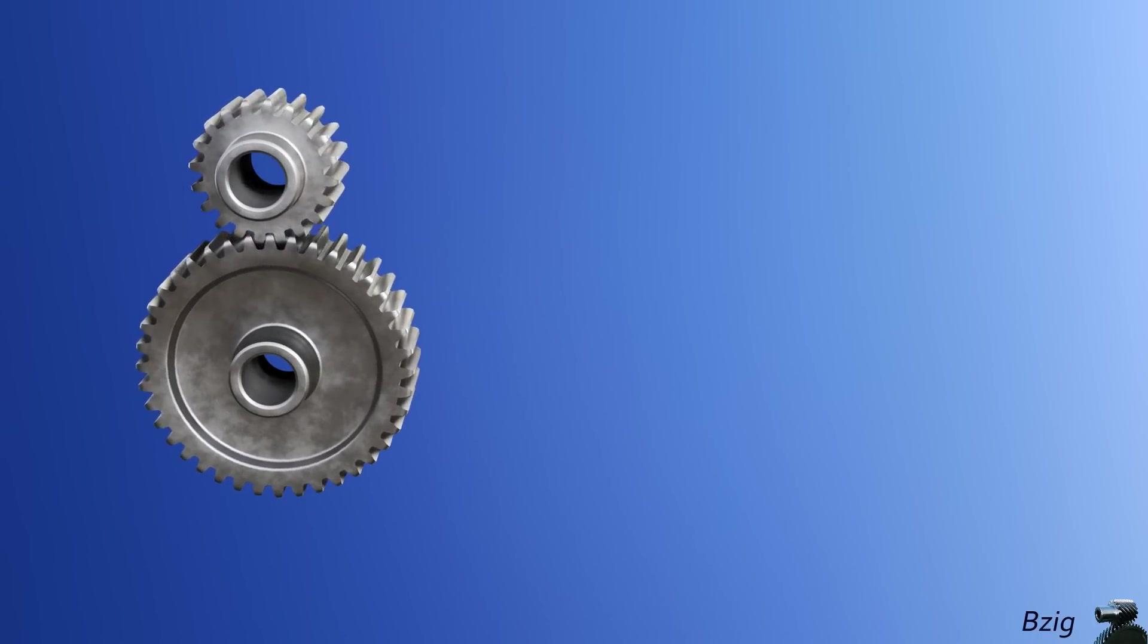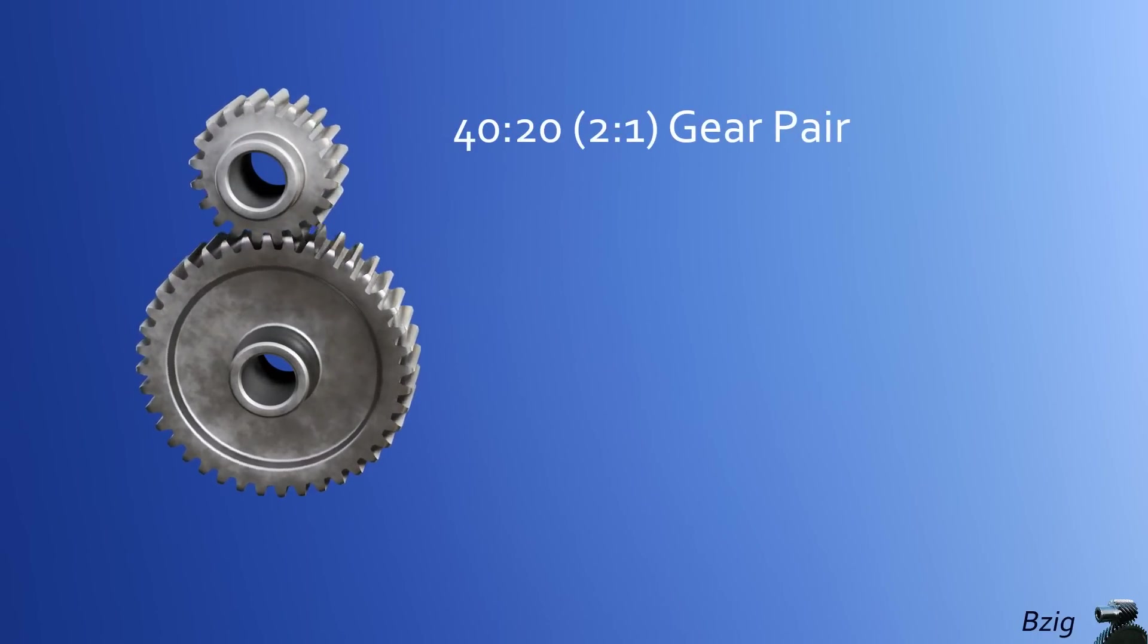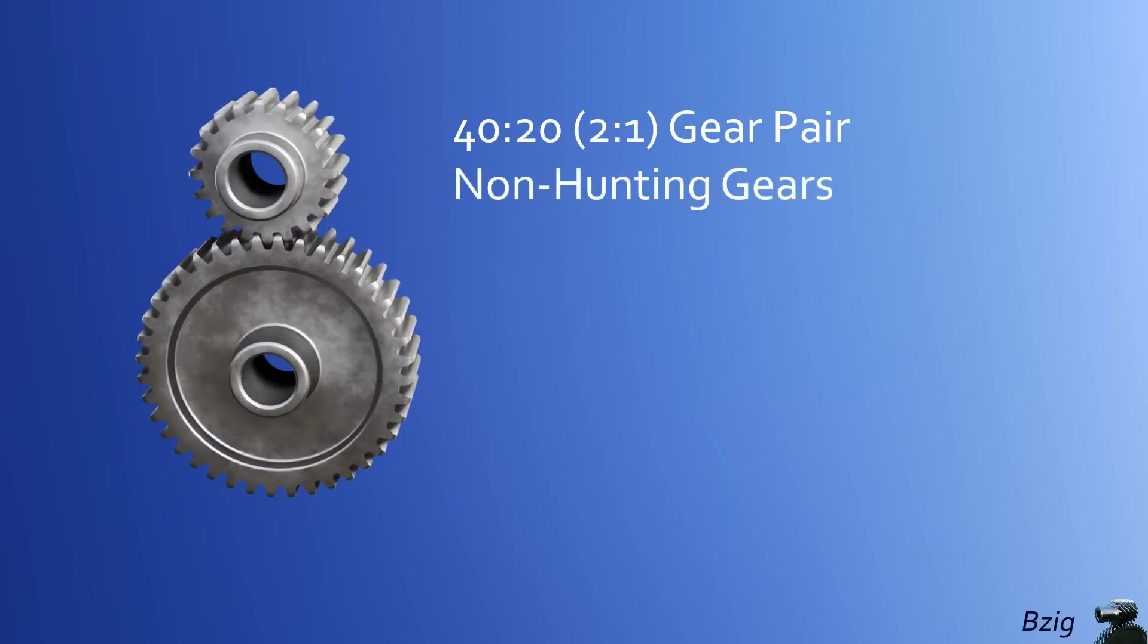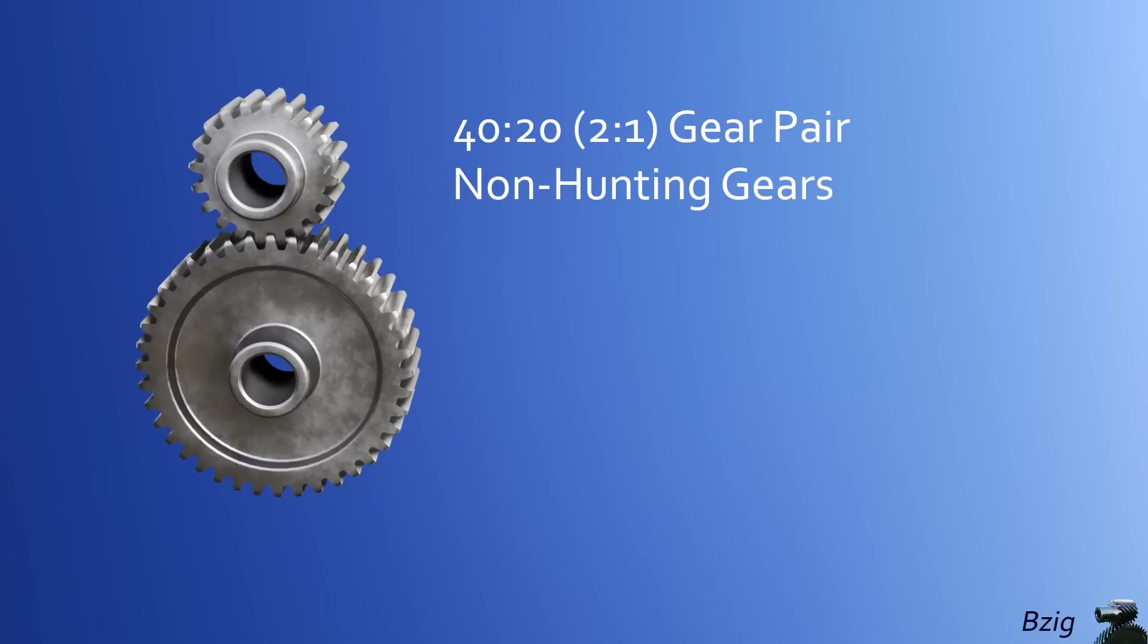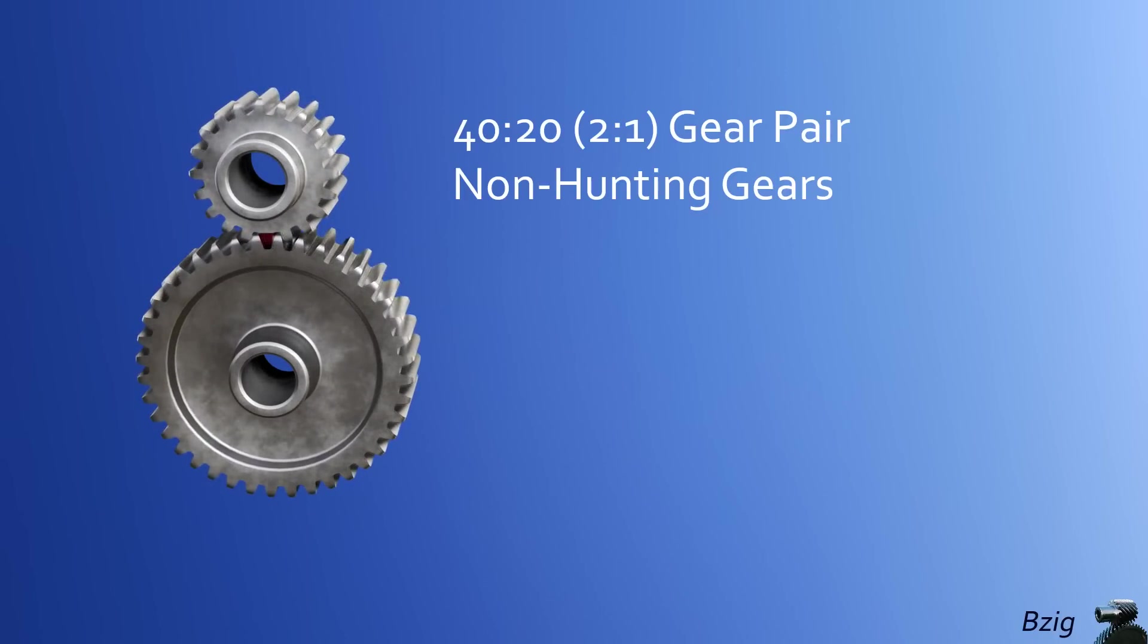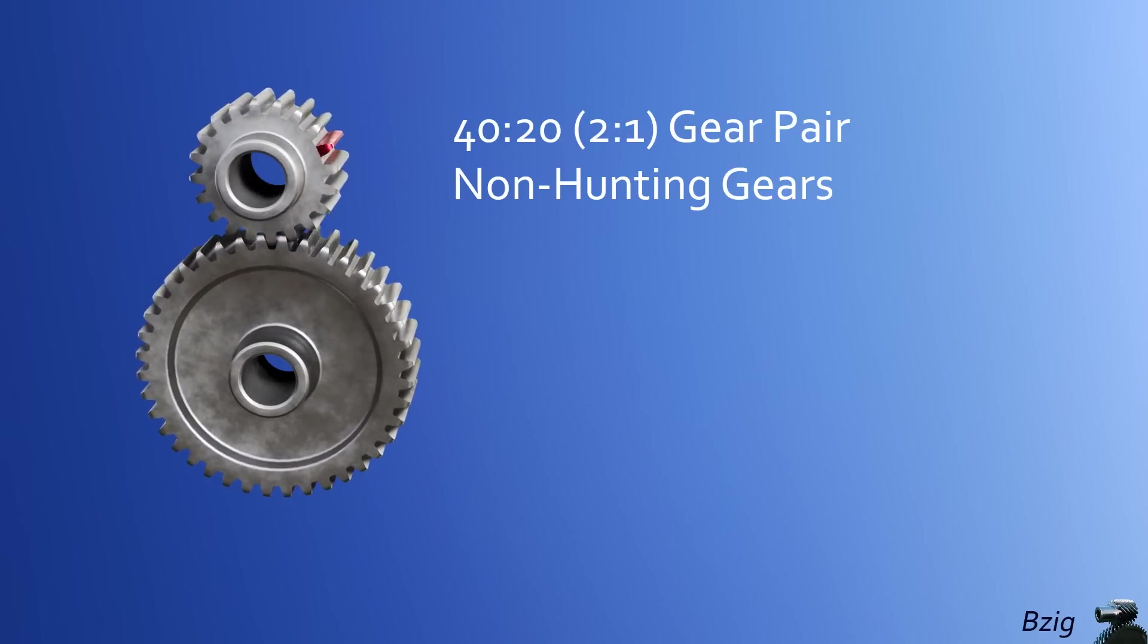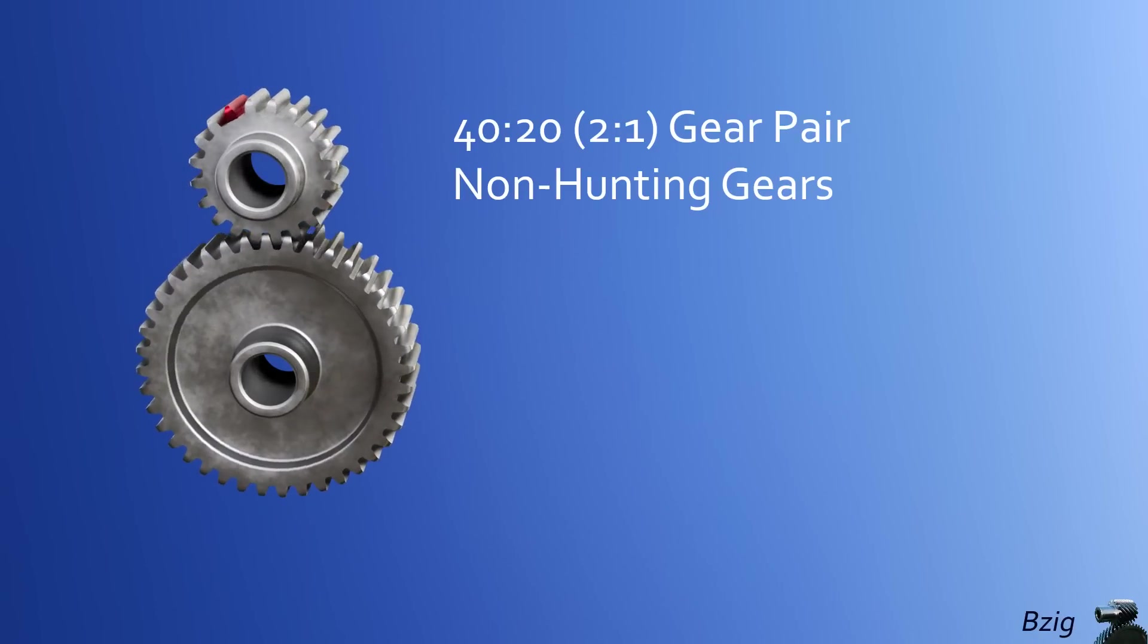Let's start with a gear set that uses a 40 to 20 or a 2 to 1 gear reduction. This is not a hunting tooth gear design. From this view, it's probably difficult to see why this gear pair isn't good for extending the life of gears. If I add color to one of the teeth to make it stand out, it might be easier to see why a non-hunting tooth design is badness for gear longevity.